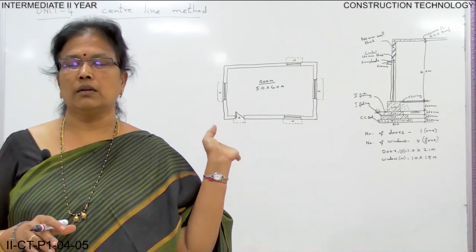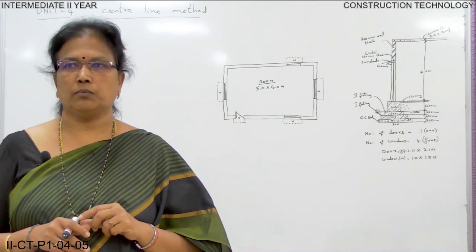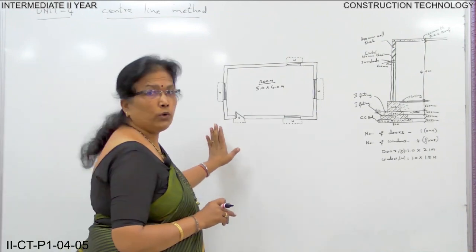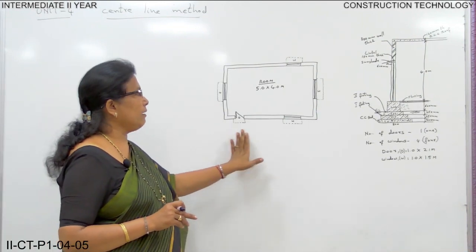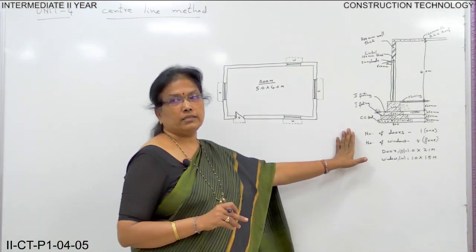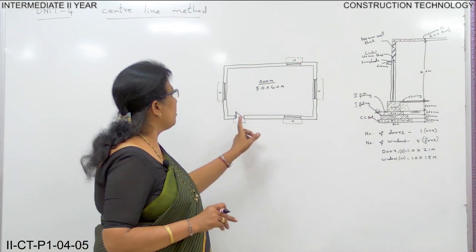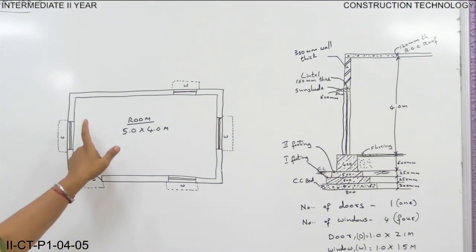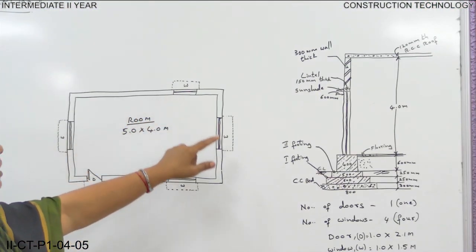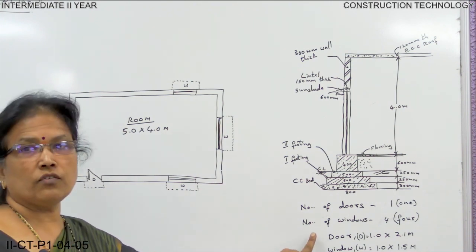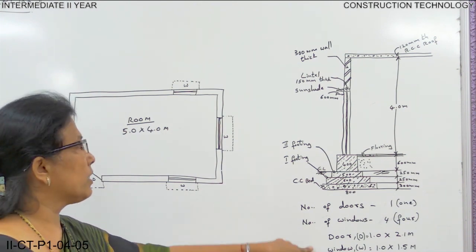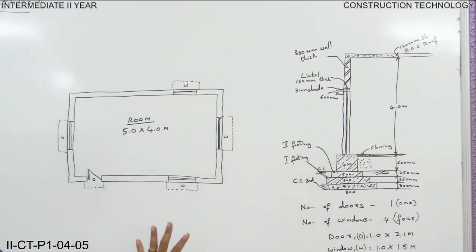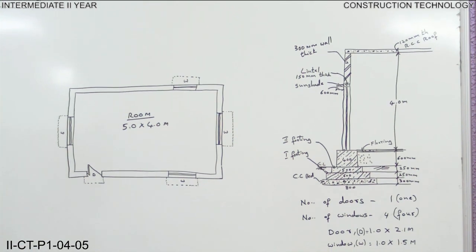Let us learn about this problem. This is the 1-room building plan and section. Number of doors is 1 and number of windows is 4, and the size and scope of doors and windows are given. Everything is given here — you know how to read the drawing.